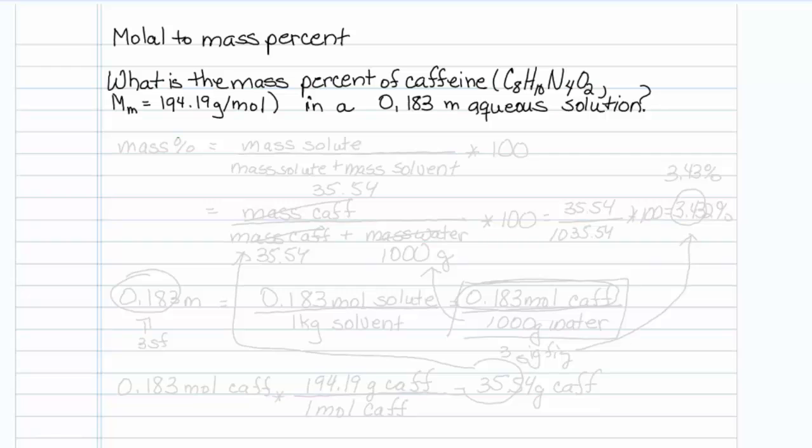Let's remind ourselves of what exactly mass percent is. Mass percent is going to be equal to the mass of solute over the mass of solute plus the mass of solvent, and it's a percent, so we're going to multiply it by 100.